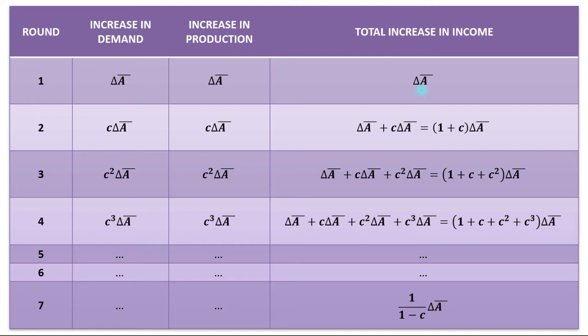We know that a fraction MPC of the increase in income will be spent on consumption, so consumption will rise by MPC times change in A-bar, which leads to an equal increase in aggregate demand. This increase in demand will be matched by an equal increase in production, so the total increase in income of these two rounds will be change in A-bar plus MPC times change in A-bar.